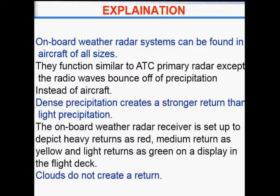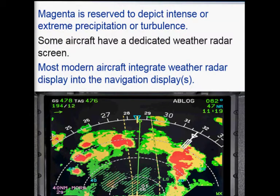These colors are really important for the pilot to decide what kind of weather is in front of the aircraft. The magenta color is reserved to depict intense or extreme precipitation or turbulence. Some aircraft have dedicated weather radar screens, but most modern aircraft integrate weather radar display into the navigation display.